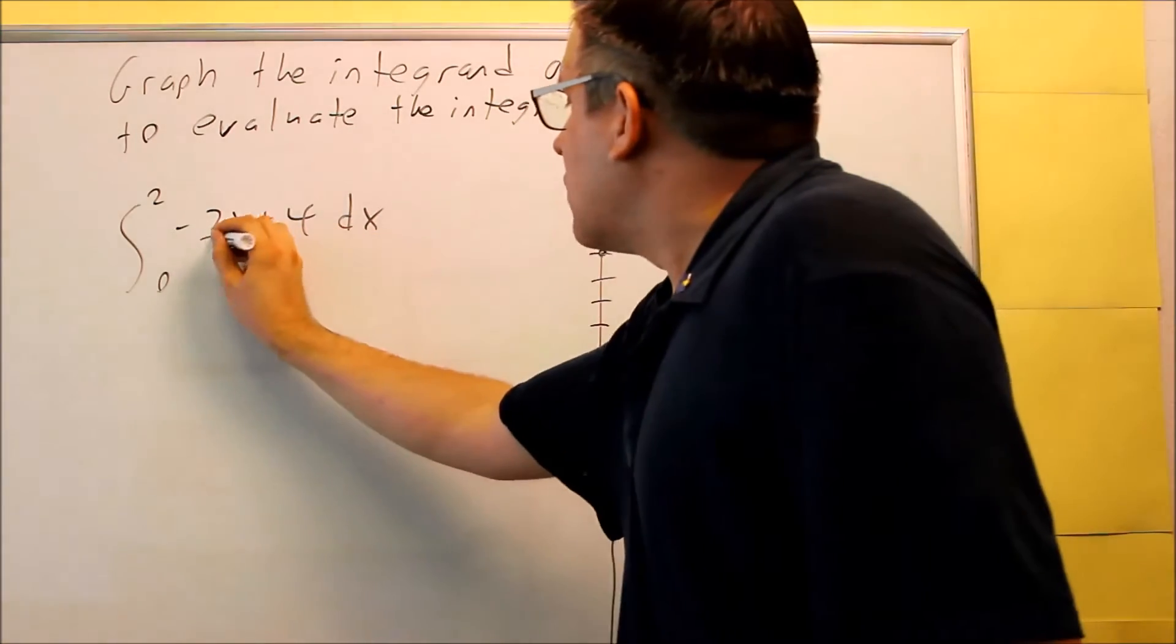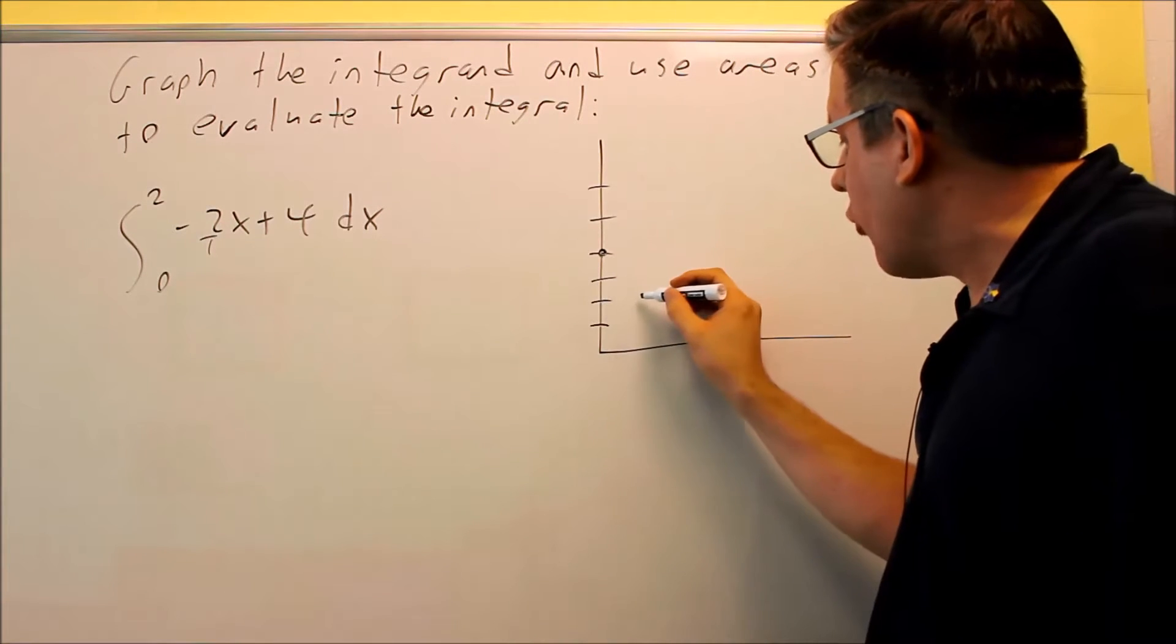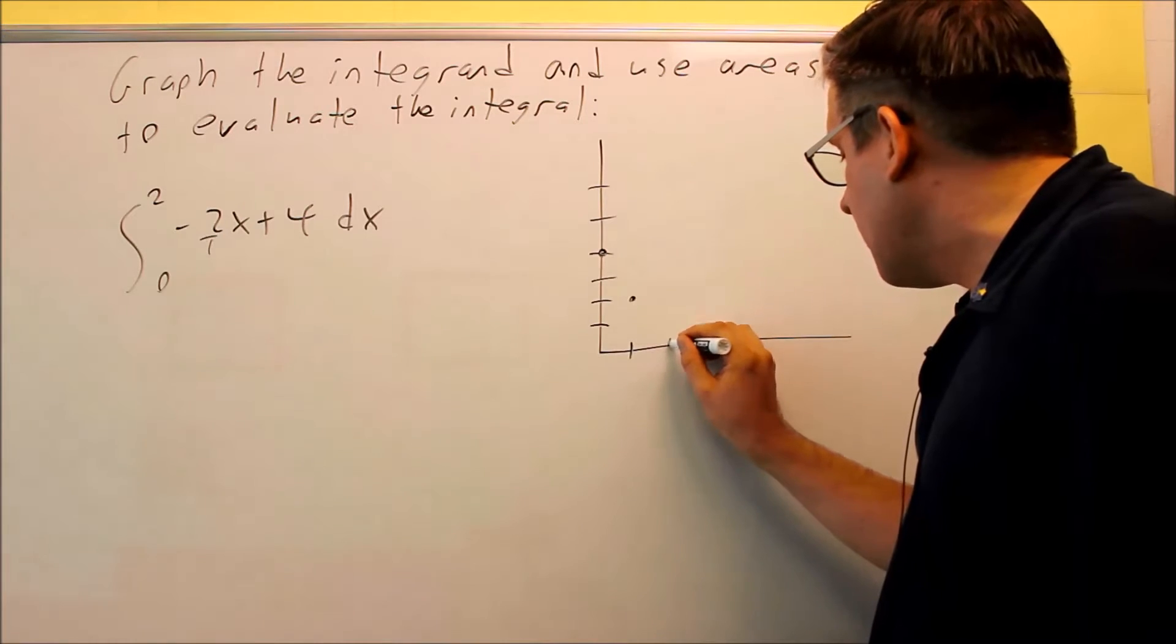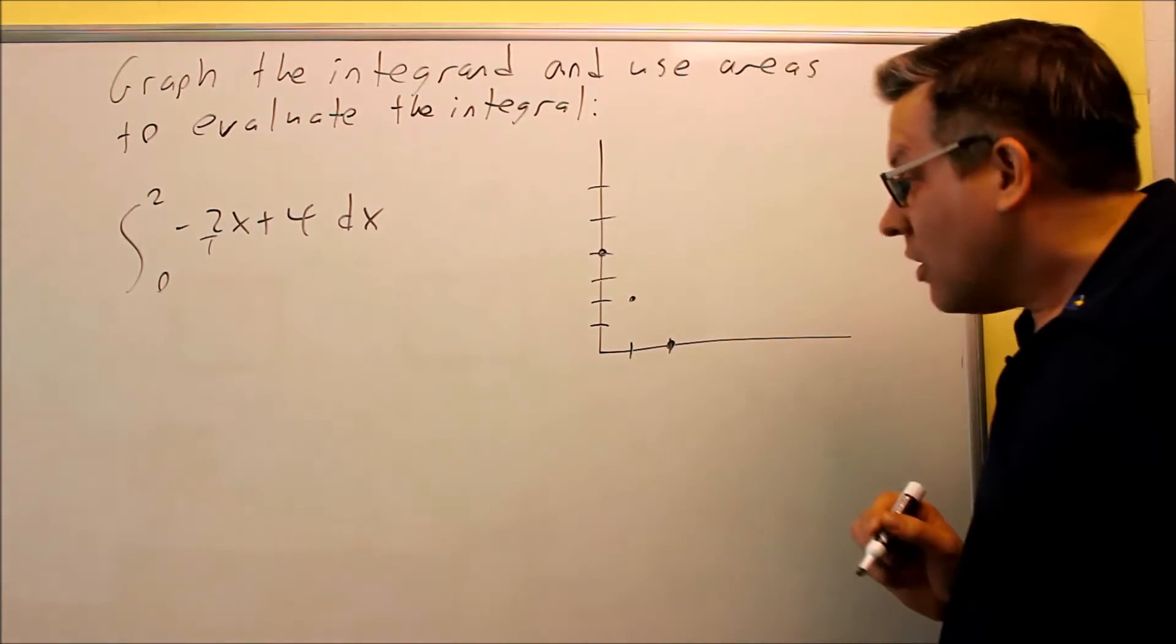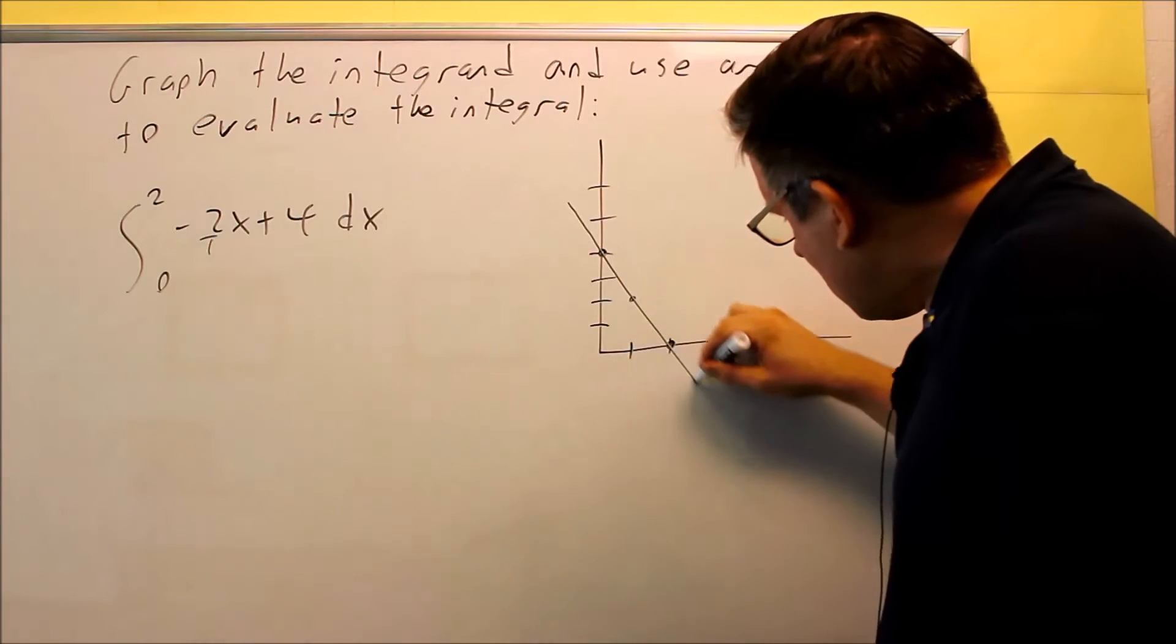So we can write that as negative 2 over 1, rise over run. So from here we're going to go down 2 over 1, and then down 2 over 1. We bring it down to here. So then the line is drawn like that.